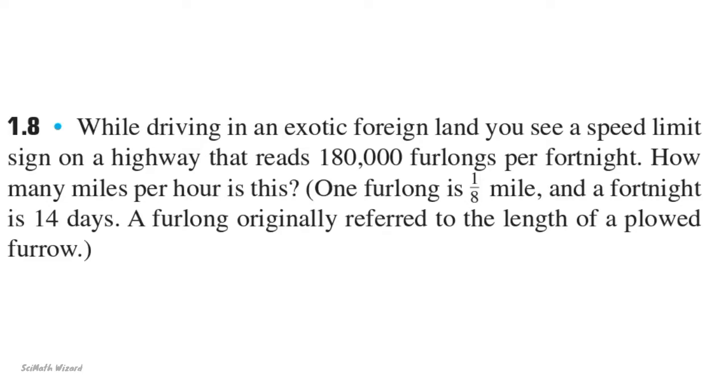While driving in an exotic foreign land, you see a speed limit sign on a highway that reads 180,000 furlongs per fortnight. How many miles per hour is this? One furlong is 1/8 mile and a fortnight is 14 days. A furlong originally referred to the length of a plowed furrow.